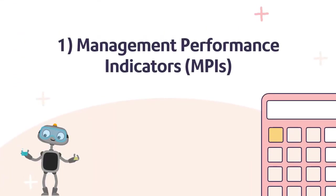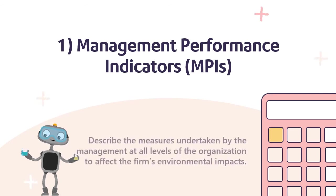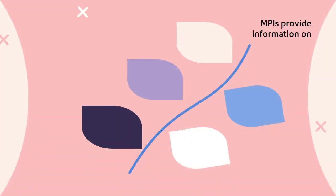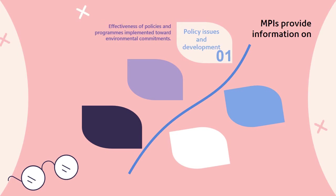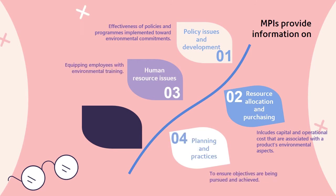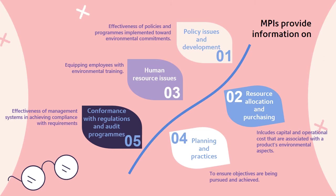Management Performance Indicators (MPI) describe the measures undertaken by management at all levels of an organization to affect the firm's environmental impacts. MPI should provide information on the organization's capability and efforts in managing environmental matters, such as policy issues and development, resource allocation and purchasing, human resource issues, planning and practices, and conformance with regulations and audit programs.